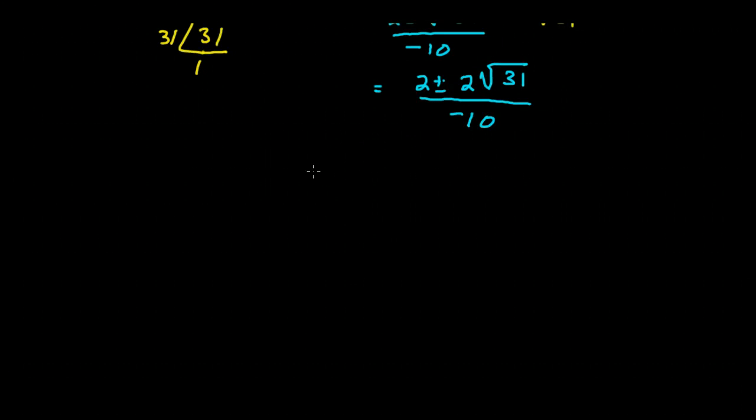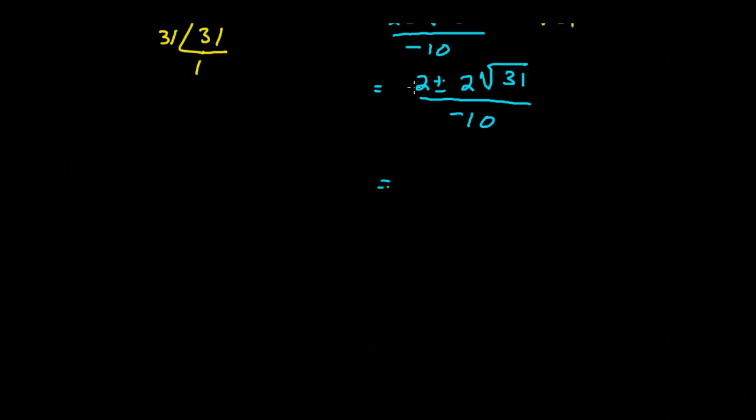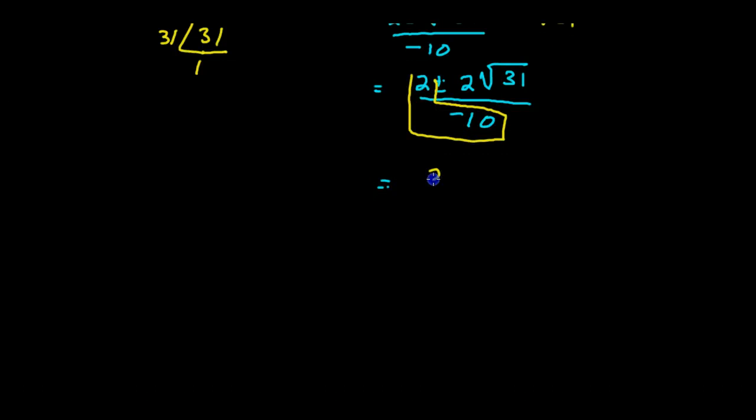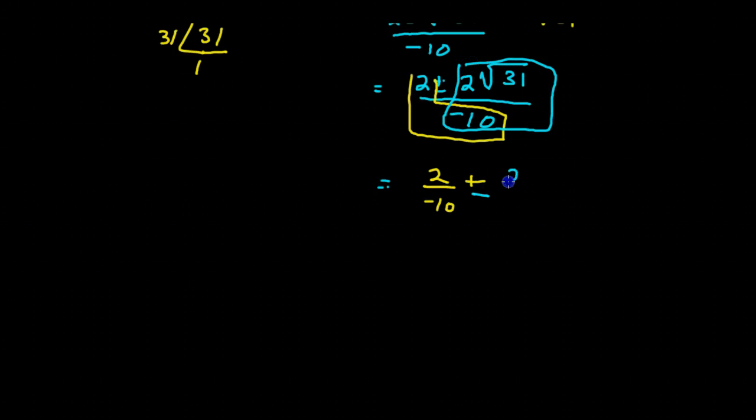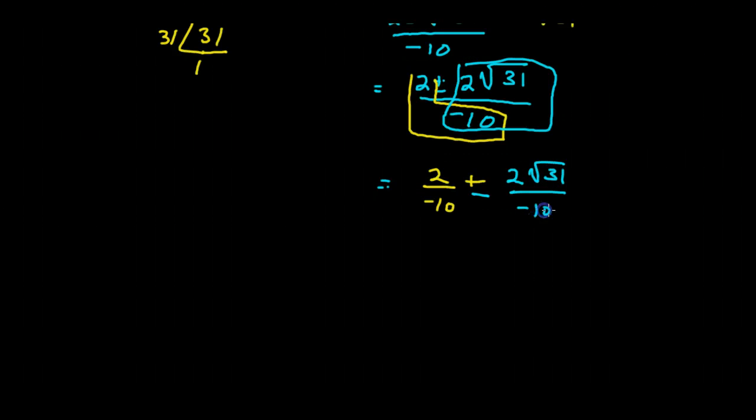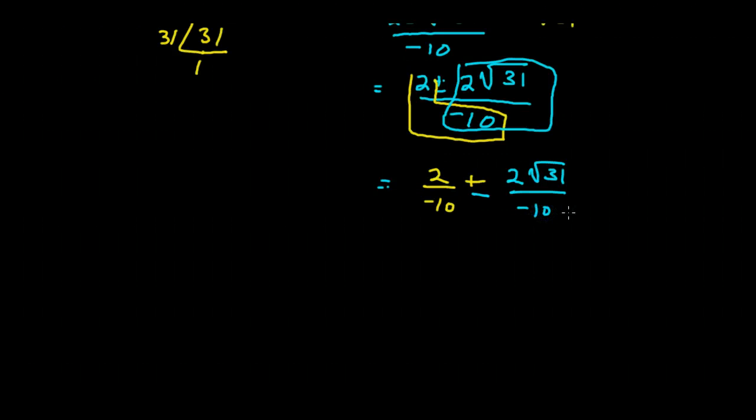It might look like we're done here, since we've simplified the radical. But our whole expression is not simplified. It might be worthwhile to look at it as this part here being 2 over the negative 10, plus or minus this part here, which will be our 2 radical 31 over a negative 10. Now, in this case, it makes it a lot easier to see what's supposed to simplify.